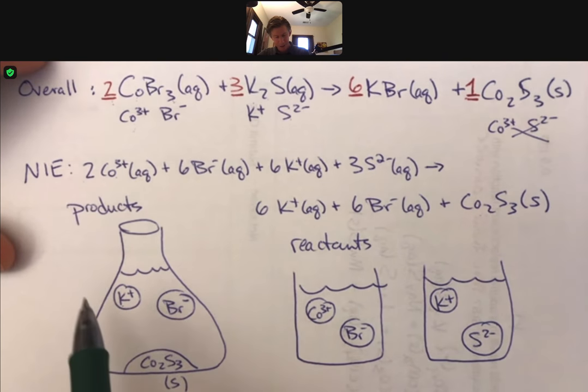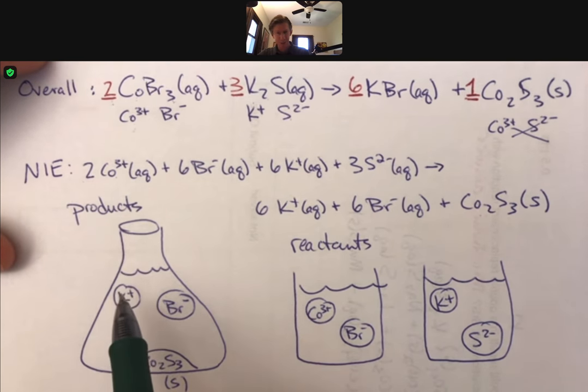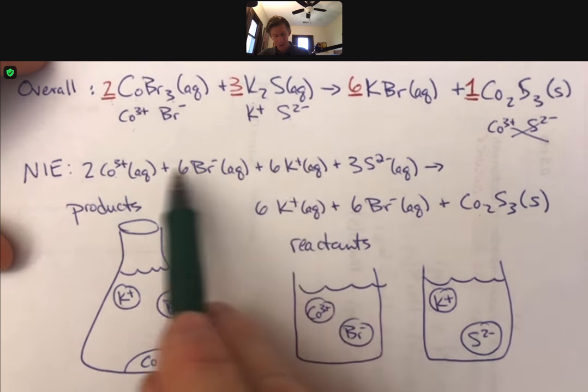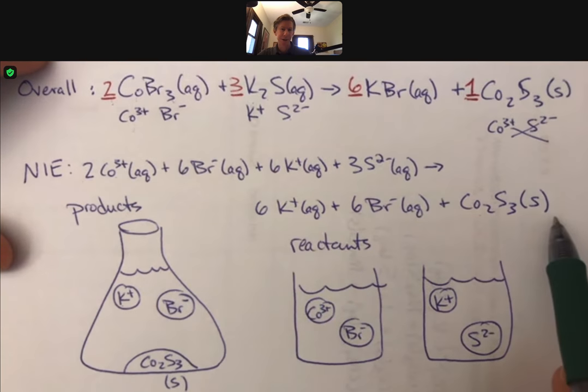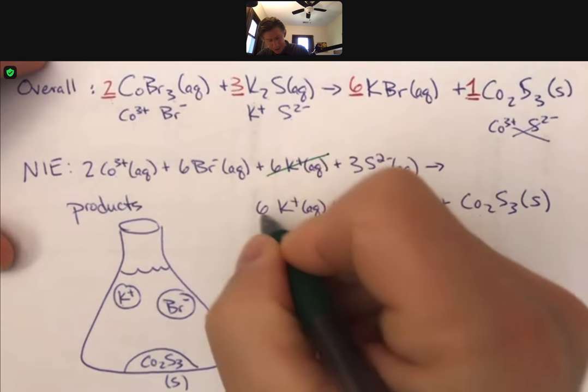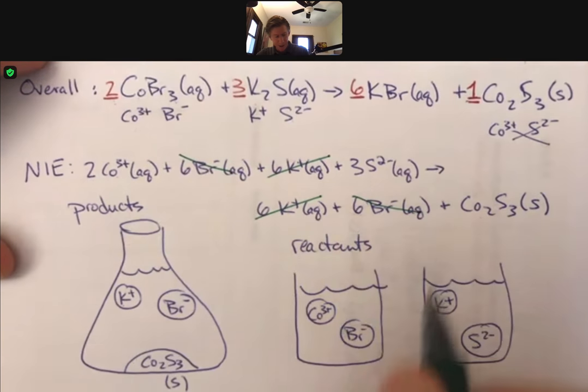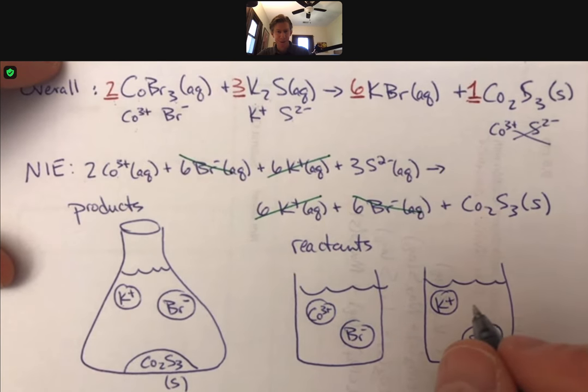Spectator ions in this one, well spectator ions, if you remember, are going to be the ions that are exactly identical on both the reactants and the product side. So that's going to be potassium. And it's also going to be bromide. So I have crossed out spectators.